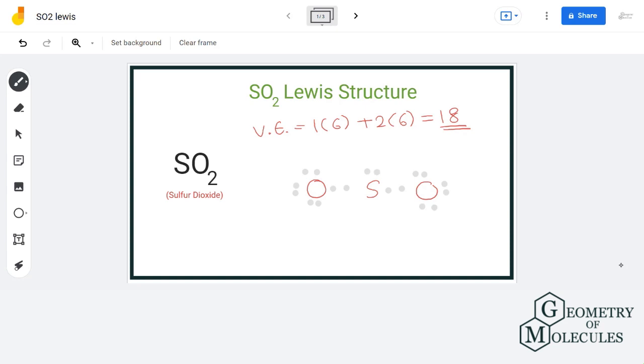Now we have used up all our valence electrons, and sulfur here is short of two electrons to complete its octet. So to avoid that, we will move two electron pairs from oxygen atom to in between oxygen and sulfur. Now that will result in formation of a double bond, thus every atom in this molecule has complete octet.